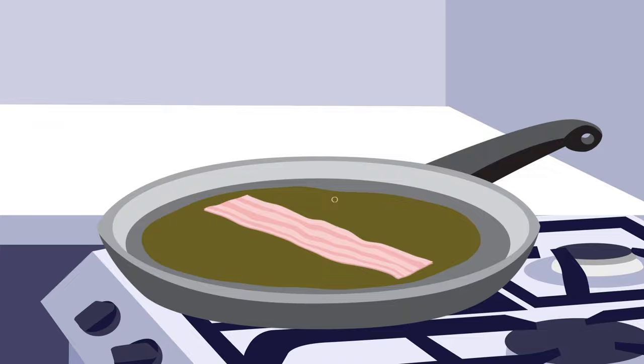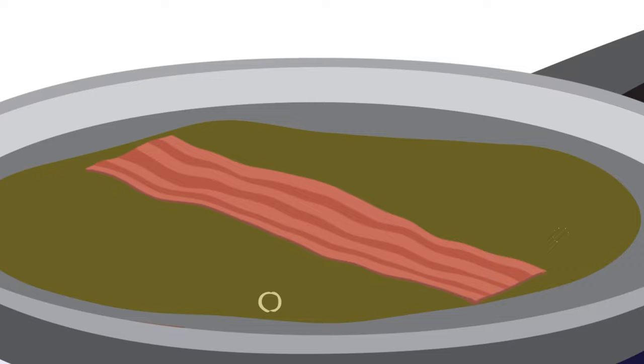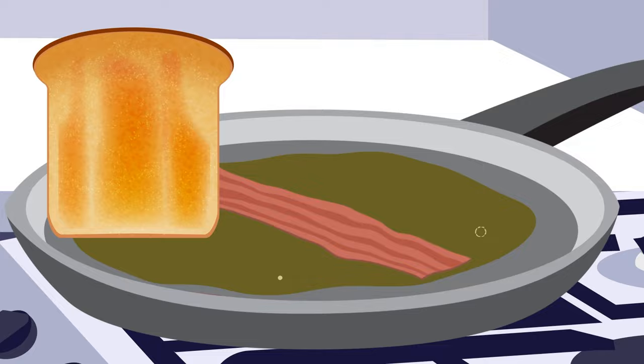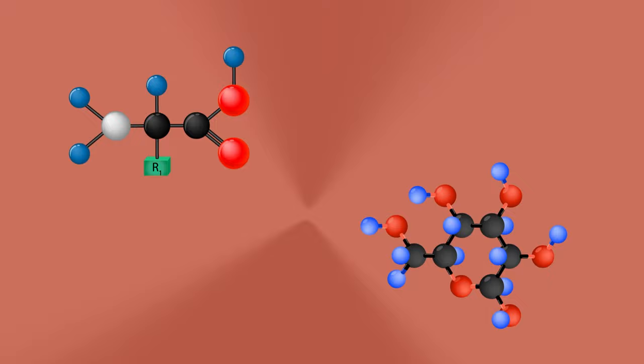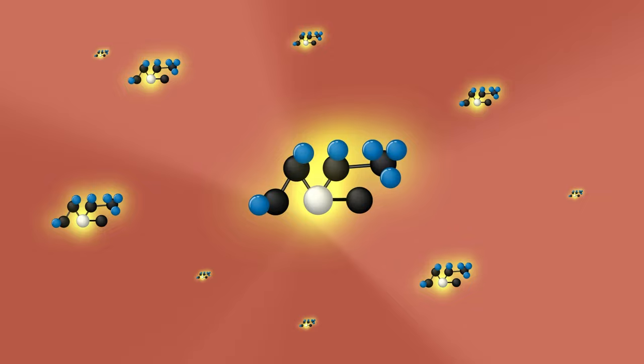Bacon starts to smell good almost from the moment it touches the hot pan. First, the strips of bacon meat undergo a special kind of chemical reaction with a fancy name known as the Maillard reaction. That's what causes food to turn brown and gives it more flavor when it's heated up, making toast darker and more delicious and giving cooked meat that classic grilled look.